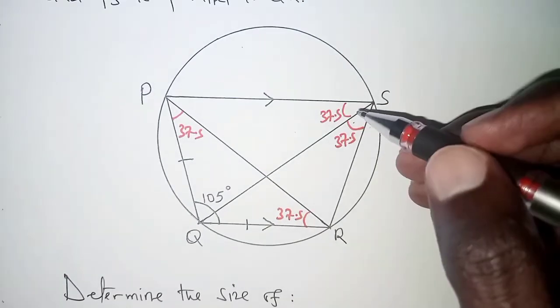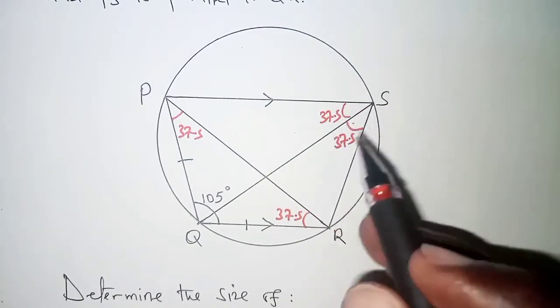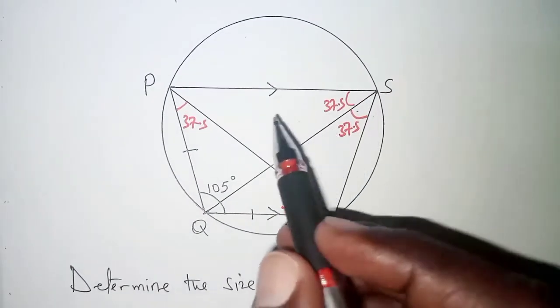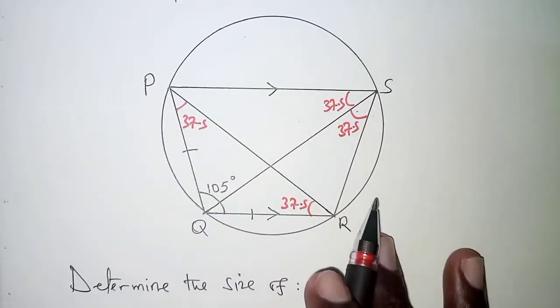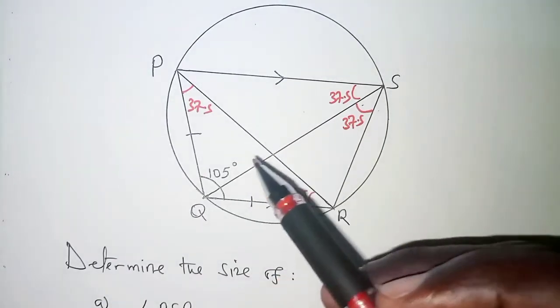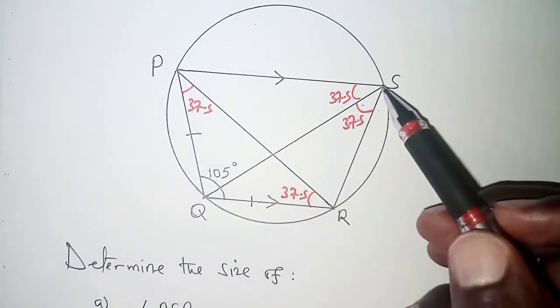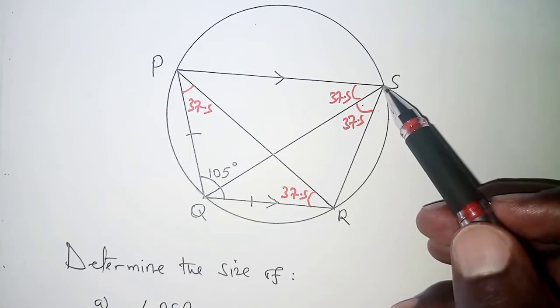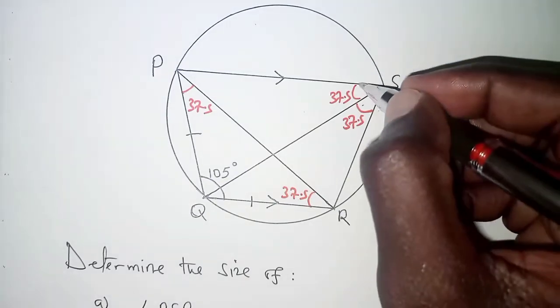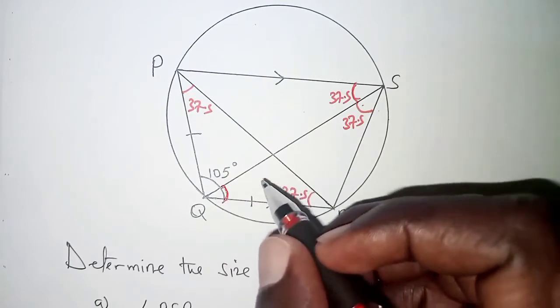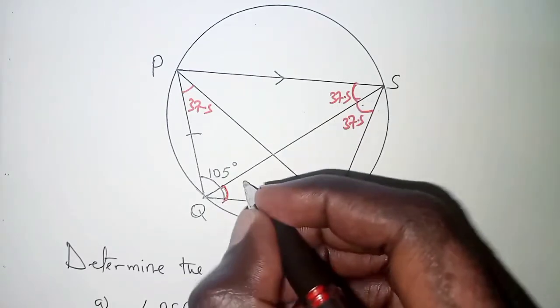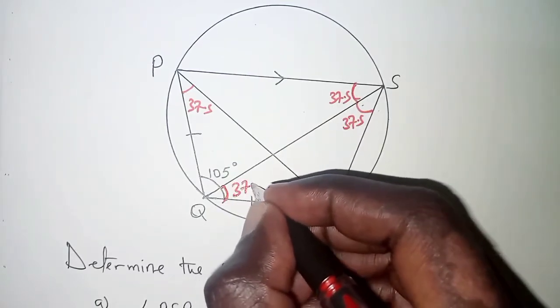Okay so the next thing we need to take note of is that line PS and QR are parallel to each other and if that is the case then QS is a transversal line and therefore this angle here and this angle here are equal that is alternate angles therefore we will have this as 37.5.